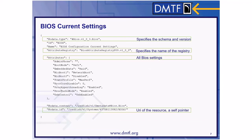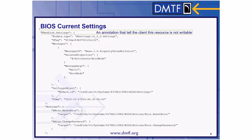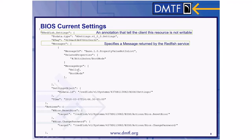This is the OData ID, which is the URI of the resource — it's like a self pointer. Here we have the Redfish settings object, an annotation that tells the client this resource is not writable. If it is found, the client can make requests to change BIOS settings by modifying the resource identified by the settings object. This array is a messages array that specifies messages returned by the Redfish service. For example, if you try to change a setting and it fails, you will find the error here. As an example, the user tried to change boot mode to the value 'hello', which is not an appropriate value, so we return an error saying it is a property value not in list.